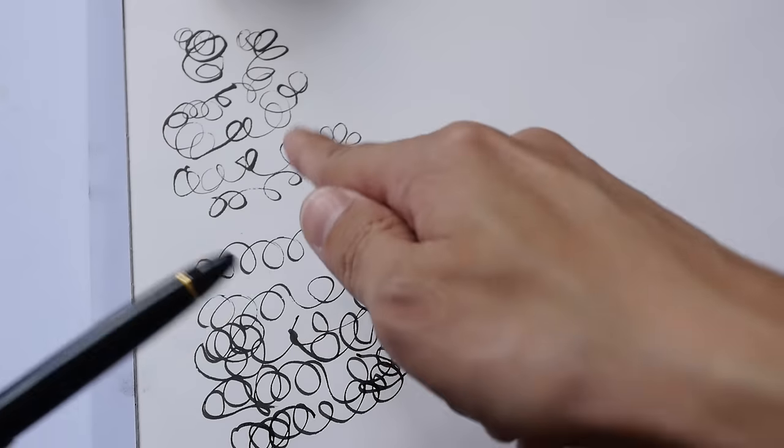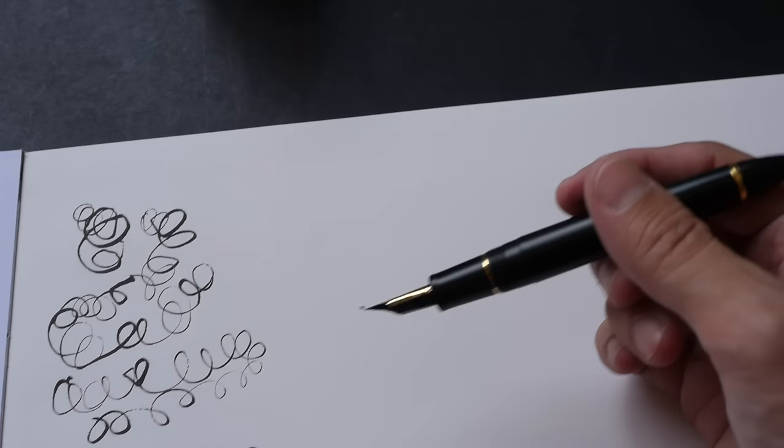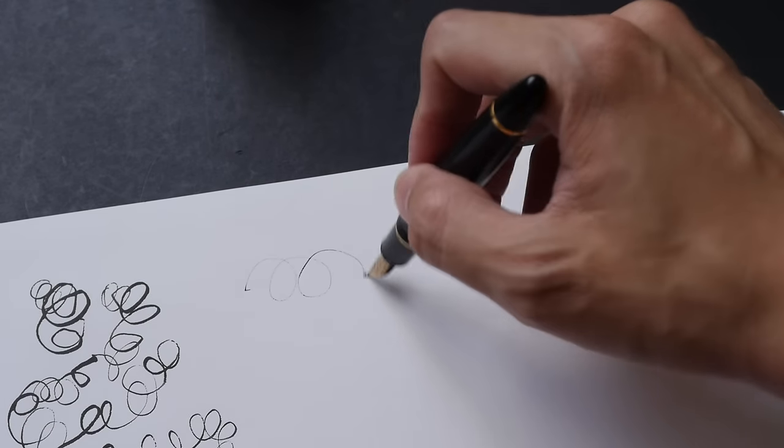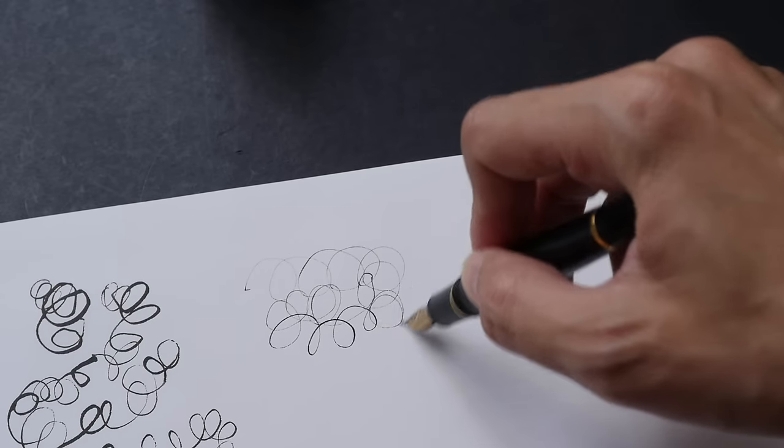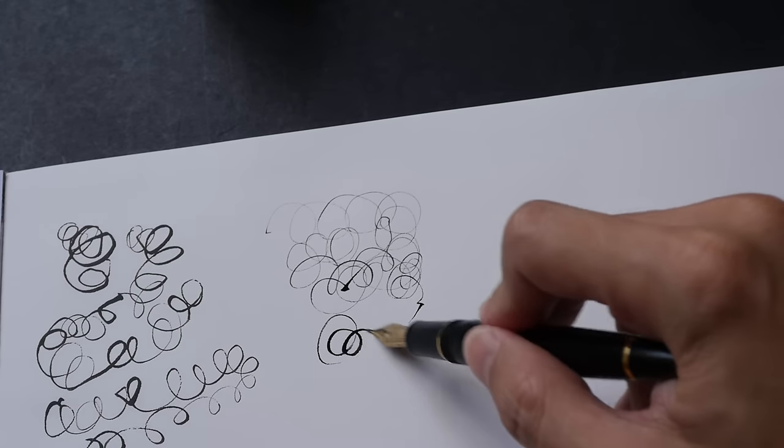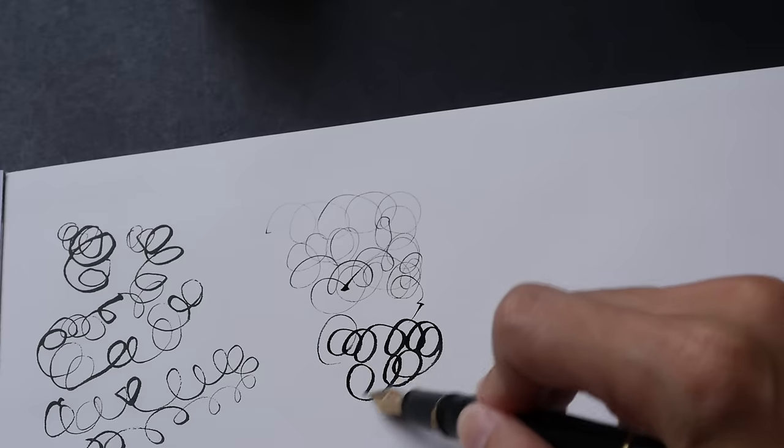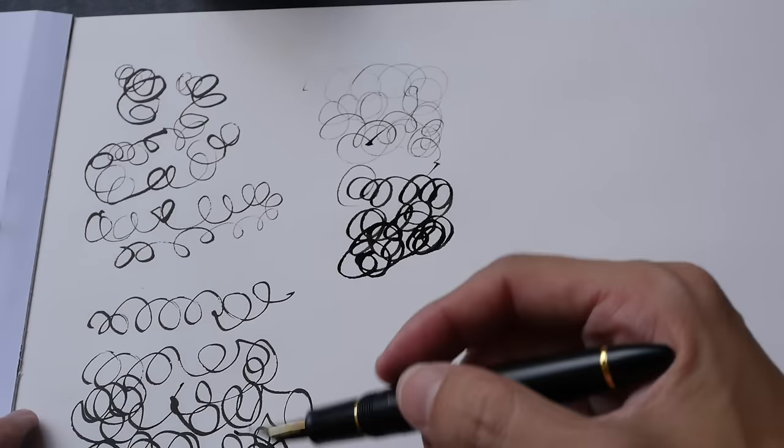But for the fude nib, you can get thick lines and thin lines whenever you want it. So you can get all the thin lines like this if you just hold the pen higher, and if you want all thick lines just hold the pen at a lower angle.